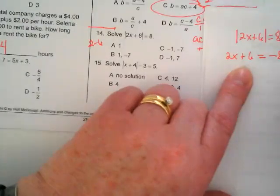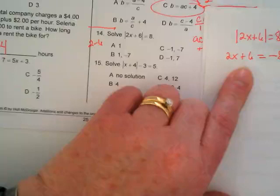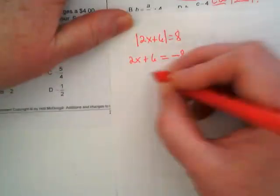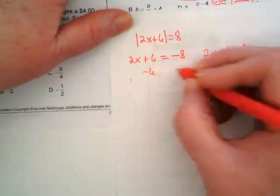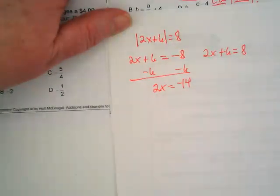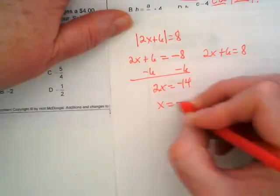But the right side does because absolute value could be whatever's in here, could have been negative equal to the positive distance. So I've set up my two versions. Minus 6, minus 6, I'm going to get 2x equals negative 14. If I divide a negative 14 by a positive 2, I'm going to get x equals negative 7.